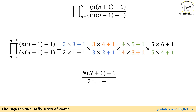Now for the second telescoping product: if we try n equals 3, we have (3 times 4 plus 1) over (3 times 2 plus 1), and we can cancel (3 times 2 plus 1) between consecutive terms. Moving from n equals 3 to 4 and so on, at the end we are left with (n times (n plus 1) plus 1) in the numerator of the last term and (2 times 1 plus 1) which equals 3 in the denominator of the first term.